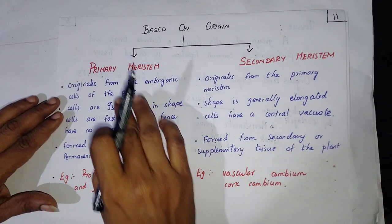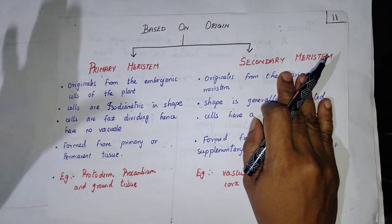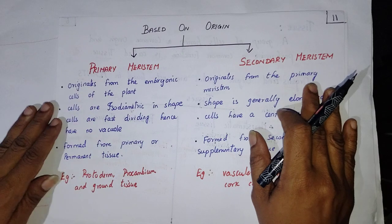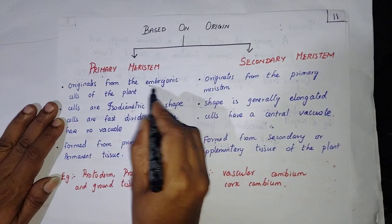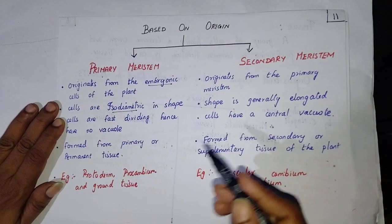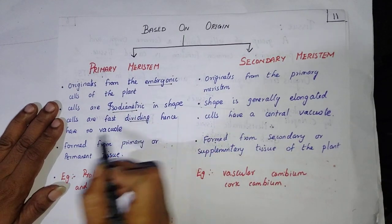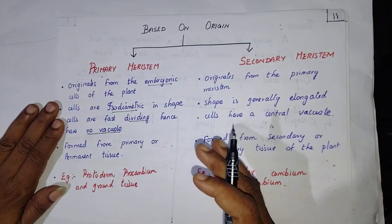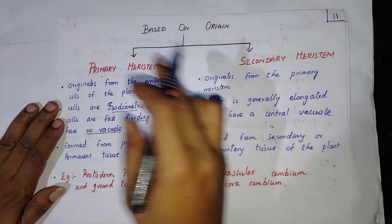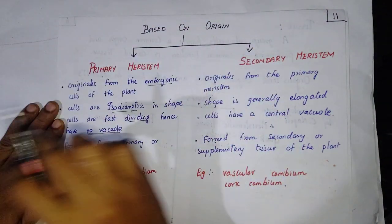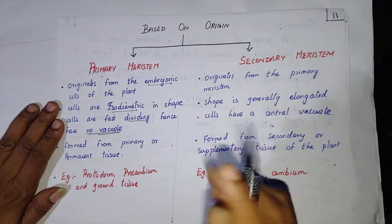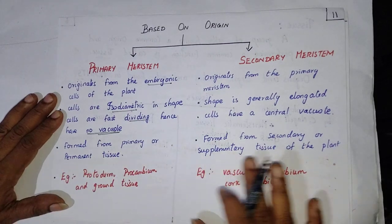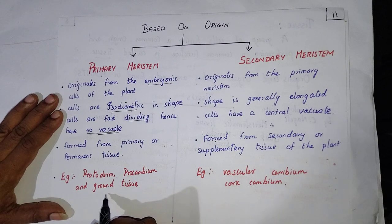Now moving on to the basic differences between primary meristems and secondary meristems. Primary meristems originate from the embryo and the cells are isodiametric, fast dividing, and hence they have no vacuole. Whereas when we draw a typical plant cell we draw a very big vacuole, primary meristems are plant cells but they don't have a vacuole. They are formed from the primary permanent tissues. Best examples are the protoderm, procambium, and the ground tissue.